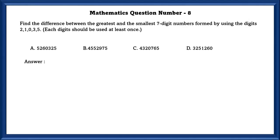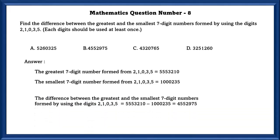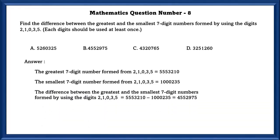Mathematics question number 8. Find the difference between the greatest and smallest 7-digit number formed by using the digits 2, 1, 0, 3, 5, where each digit should be used at least once. The greatest 7-digit number formed is 55,53,210 and the smallest 7-digit number is 10,00,235. The difference between the greatest and smallest 7-digit number is 45,52,975, which is option B.